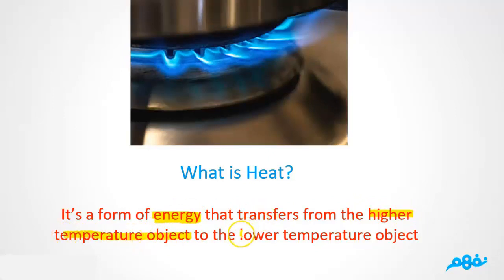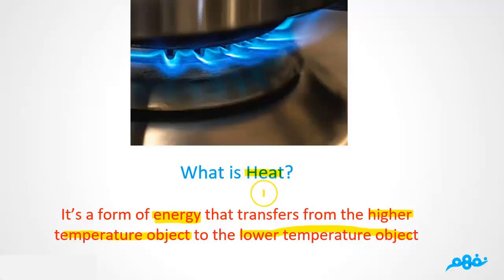For example, if I have a glass of hot water and I'm feeling cold, the hot water is the higher temperature object. When I hold the glass of hot water, my hand feels warm. That's because heat transfers from the higher temperature object — the glass of hot water — to the lower temperature object, which in this case is your hand. So heat is a form of energy that transfers from the higher temperature object to the lower temperature object.